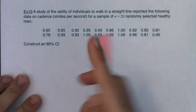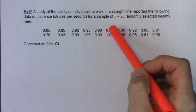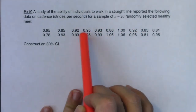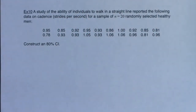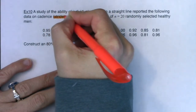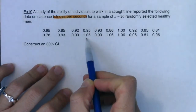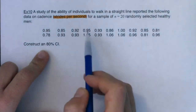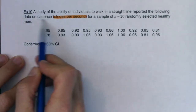We're asked to construct an 80% confidence interval. I have a sample of 20 healthy men. What was the variable? Looking at the data, I see numbers — that suggests a numerical variable, so maybe I'm in mean land. Next, I see units: strides per second — another clue I'm in mean land. A third clue is data values like 1.05, which is larger than one. Every proportion we deal with is between zero and one, so this is not a proportion. The variable is cadence.